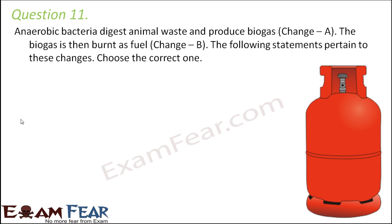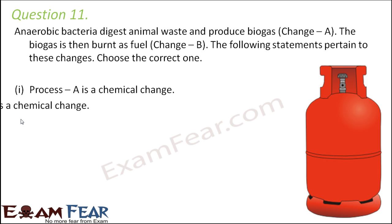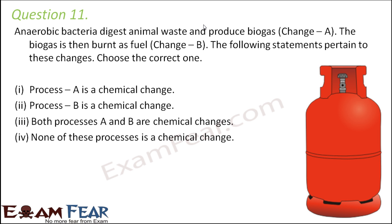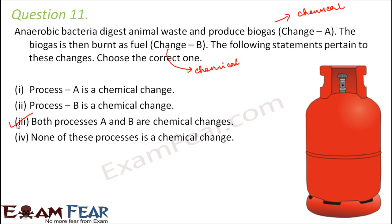Question number 11: Anaerobic bacteria digest animal waste and produce biogas, which is then burnt as fuel. Change A — digestion of animal waste to produce biogas — involves anaerobic bacteria acting on waste materials to form new chemical substances, so change A is a chemical change. Change B — burning of the fuel — releases heat and produces new substances like carbon dioxide, so this is also a chemical change. Therefore, both A and B are chemical changes, making the third option correct.